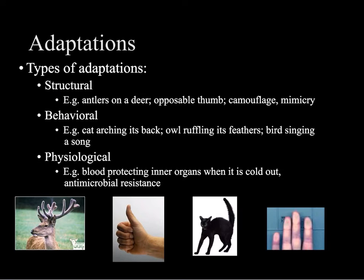The adaptations we just looked at are all structural adaptations — the things we can see, the physical structures like antlers on a deer. We all have an opposable thumb; try writing your name, eating dinner, or tying your shoes without it — you'll realize they're much more difficult. Camouflage, as we just looked at, is another example. Mimicry is when animals, or sometimes plants, look like other organisms — like a snake that looks like a poisonous snake but isn't. Those are all structural adaptations.